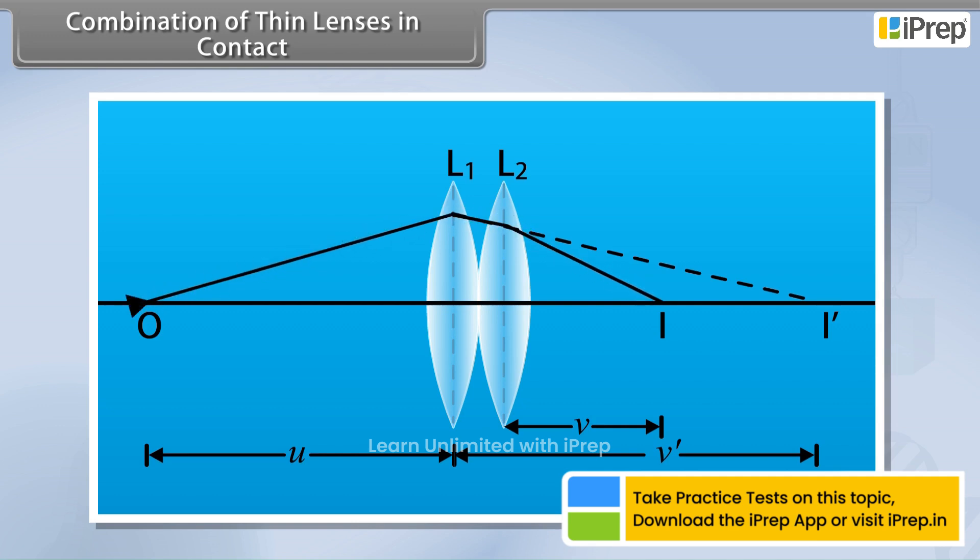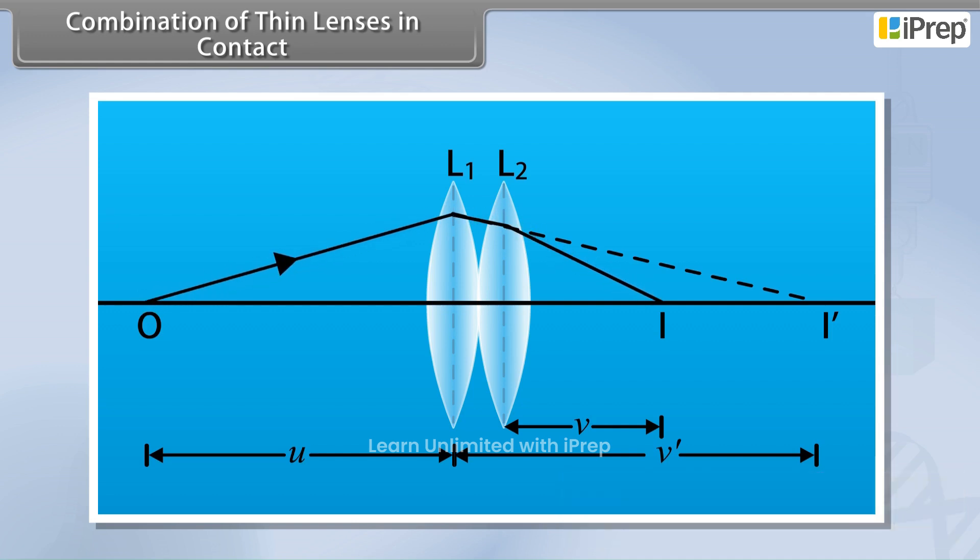The lens L1 deviates the rays towards I dash, that is I dash is the image formed by the first lens L1 alone.